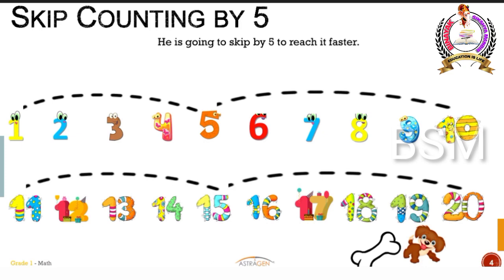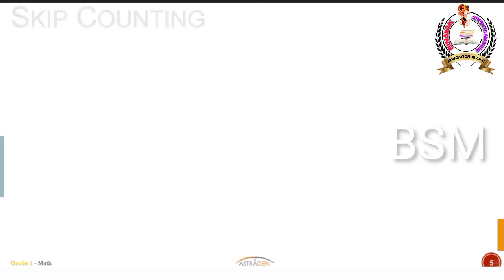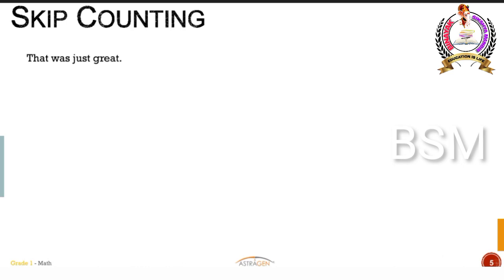Didn't Tommy reach really faster? So if you want to count something quickly, you should skip count. For example, if I ask you how many tiles are in your room and you have 5 tiles below one another, you would quickly skip and say 5, 10, 15, 20, 25, then leave 26, 27, 28, 29 and reach 30. Tommy is so happy because you helped him skip count by 5 and reach his bone really, really fast.